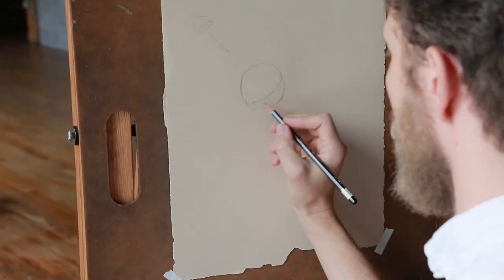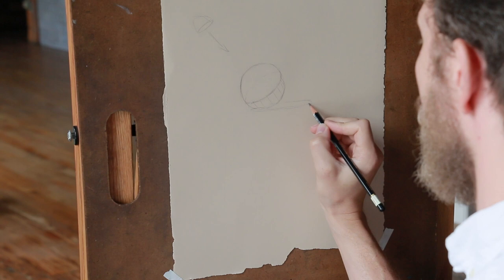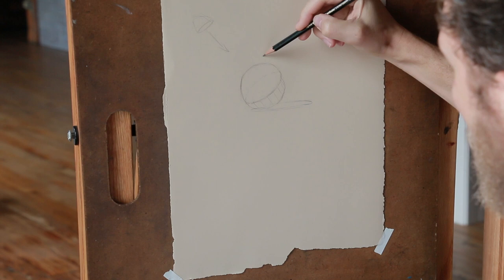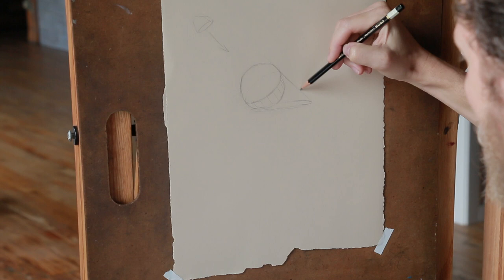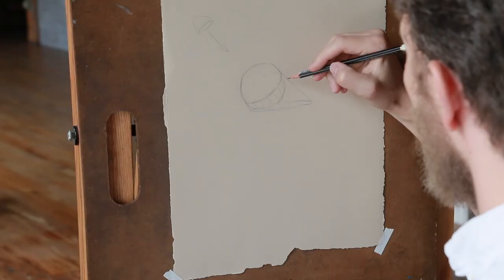Now let's imagine the sphere is sitting on a flat surface, like a table. There would be a corresponding cast shadow — it's the shape of the sphere draped over the flat surface of the table. So I'm imagining this line comes in tangent to the edge of the sphere and then creates some sort of arc in this direction, and something similar on the other side. It's not a perfect diagram but it gets the ideas across.